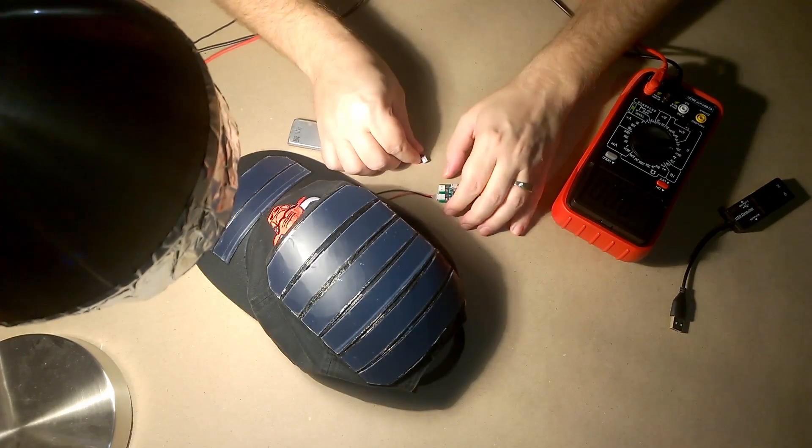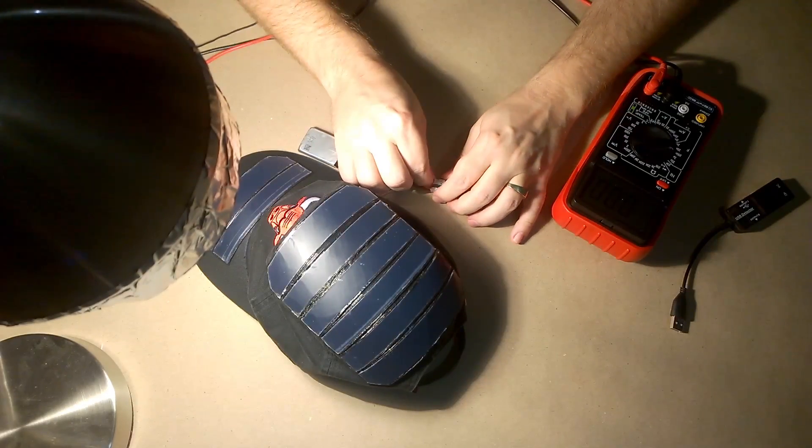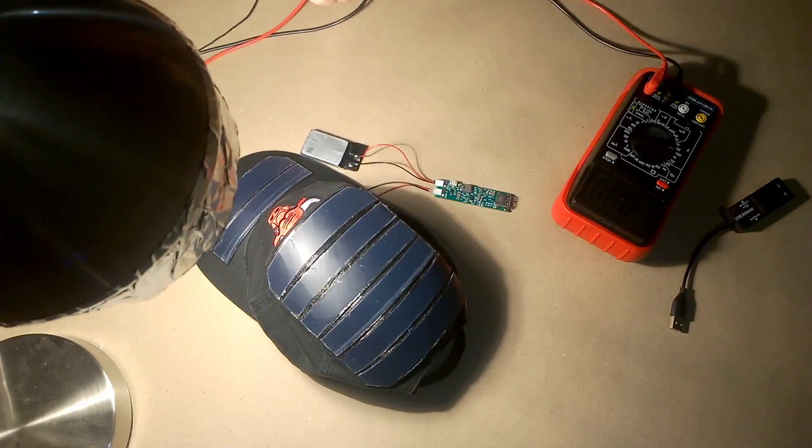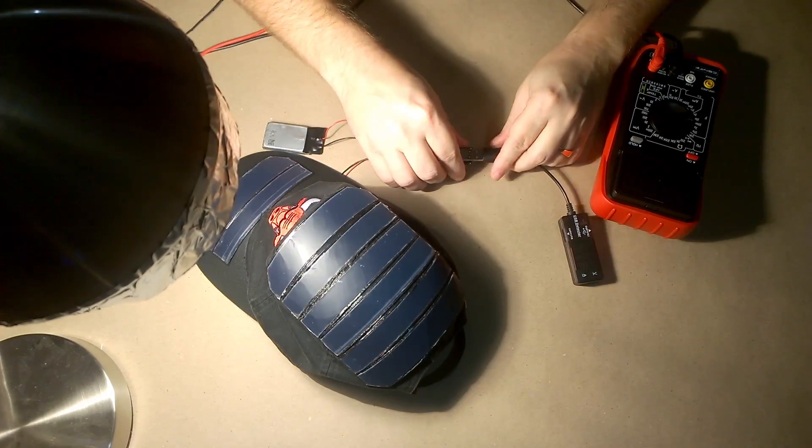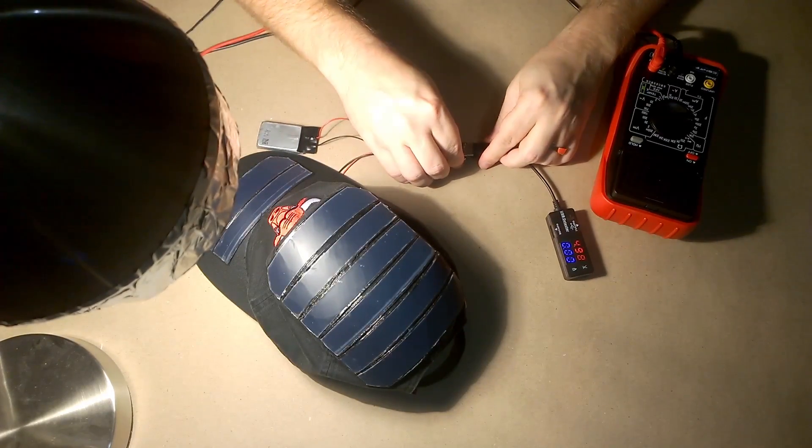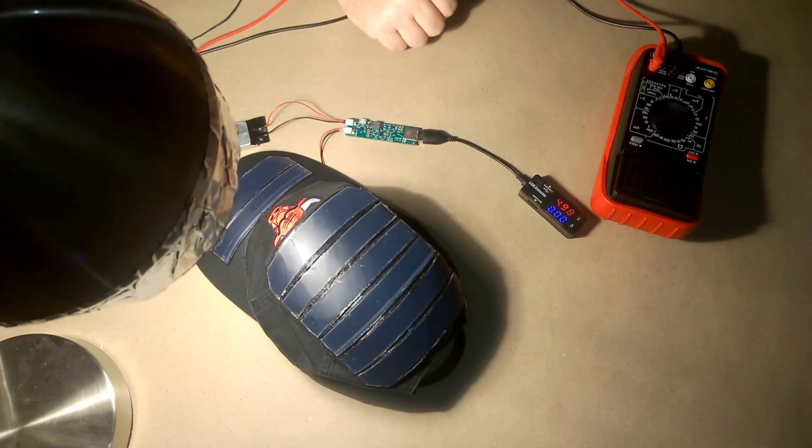So let's connect the battery to the battery port here. And now I'm going to connect my USB power tester to the output port. And... Oh! Hey! There we go! Yeah! Okay, so we're getting 5 volts. Well, close enough. 4.98 volts out.